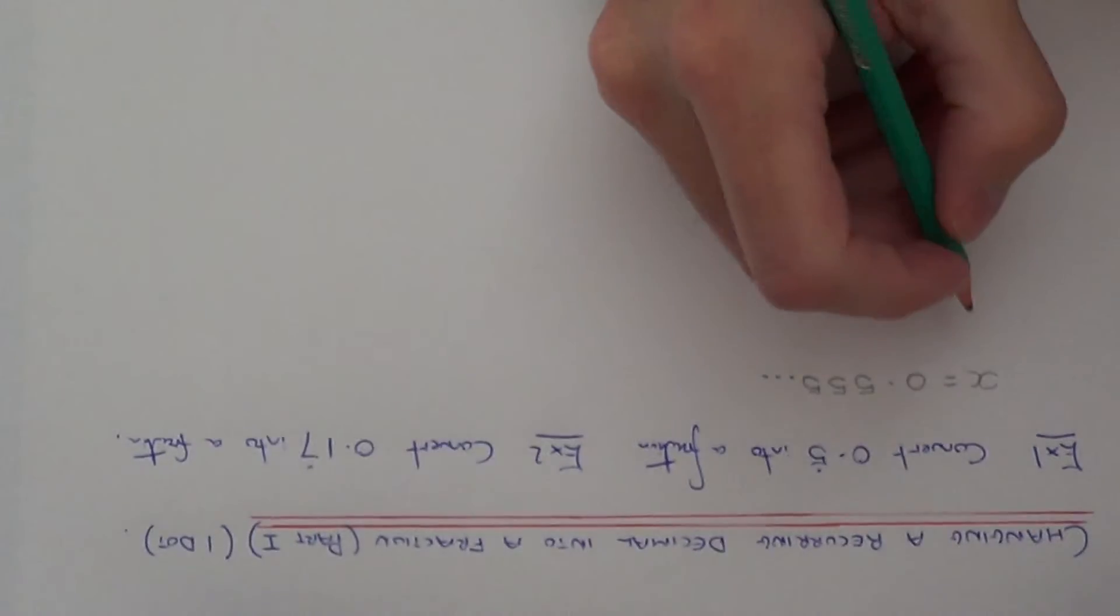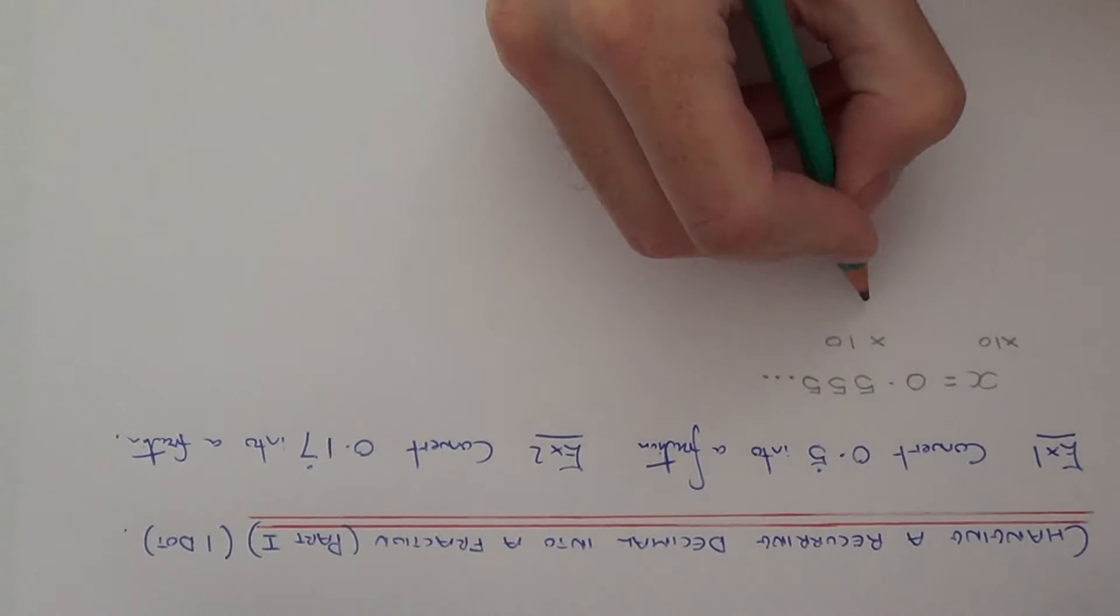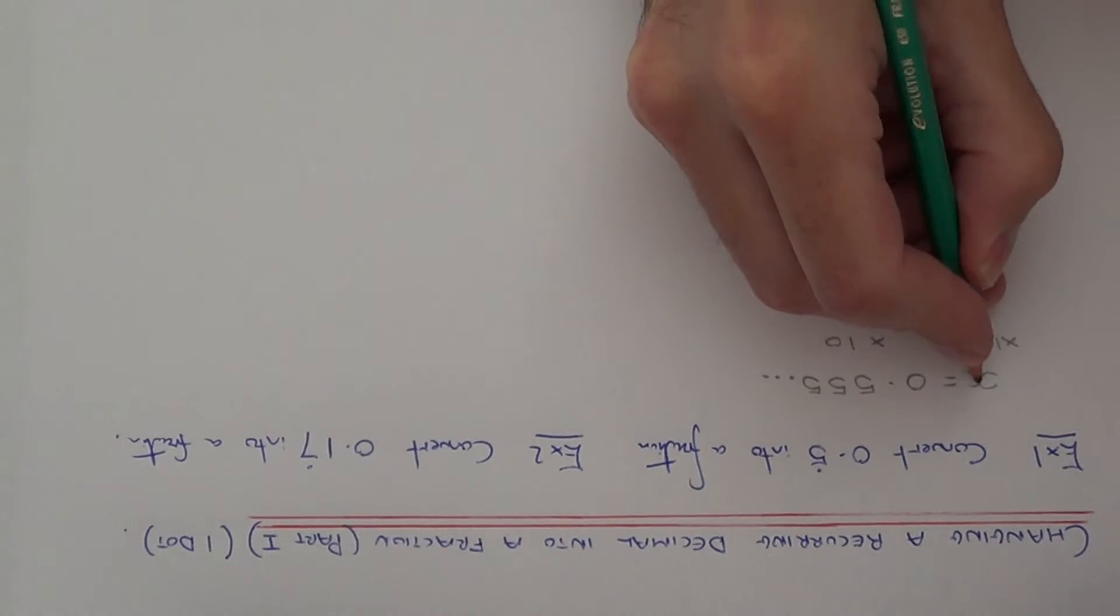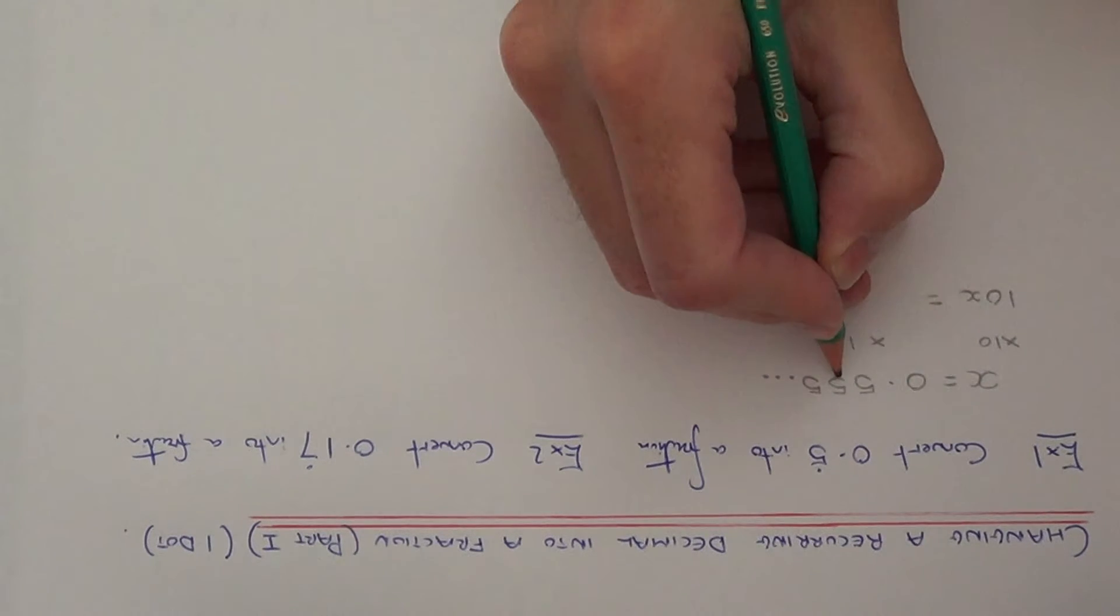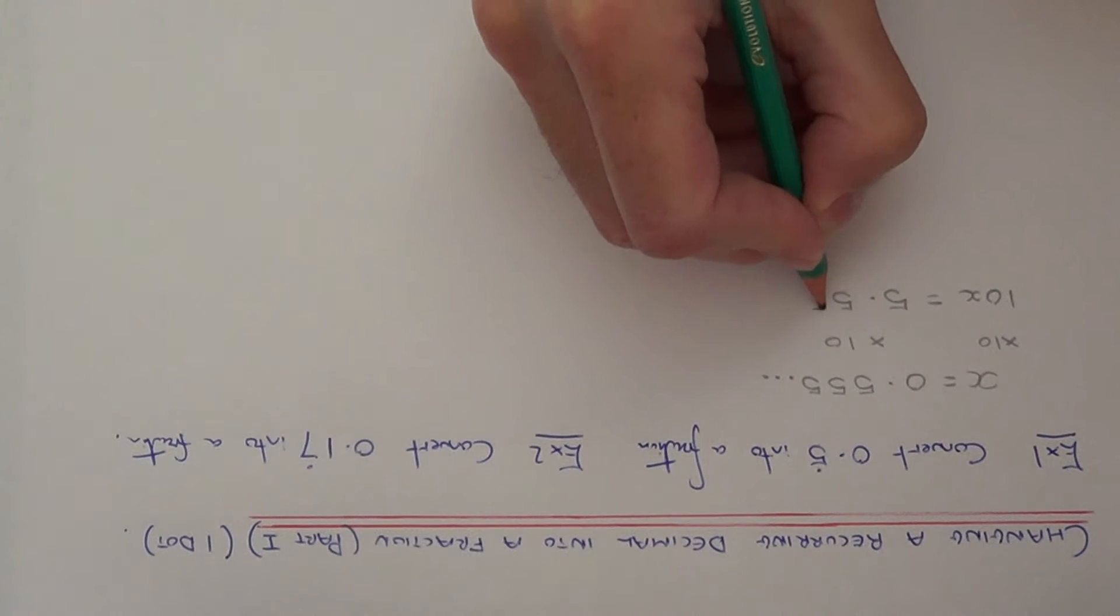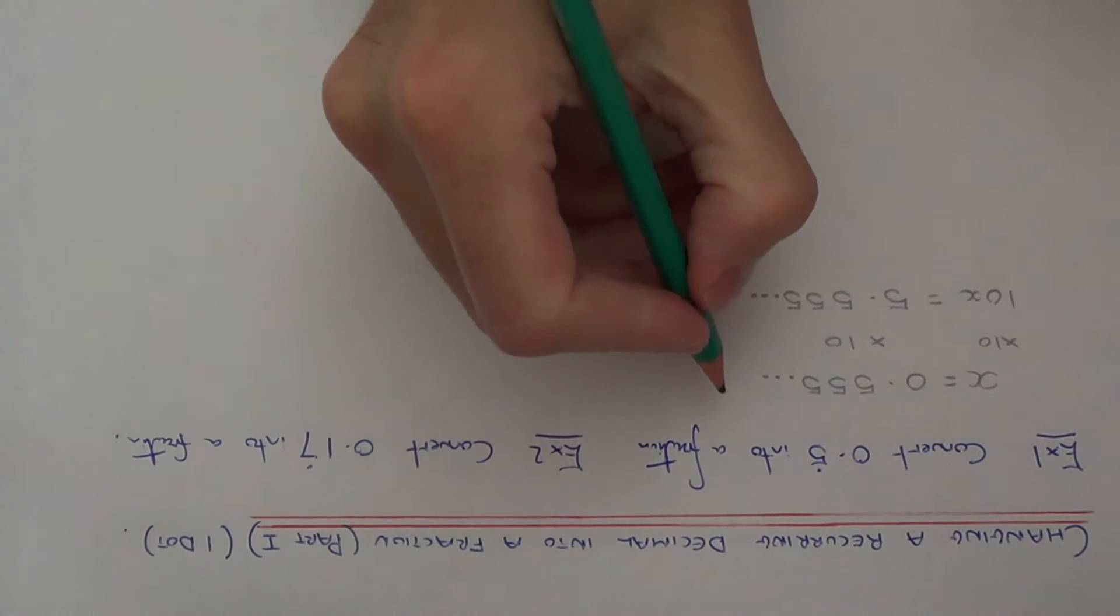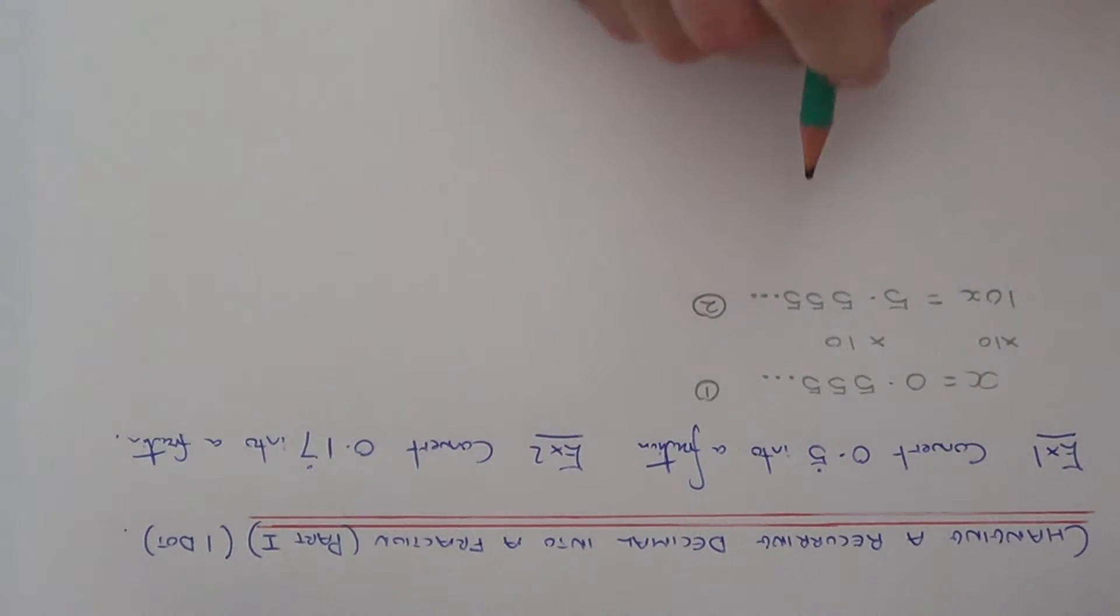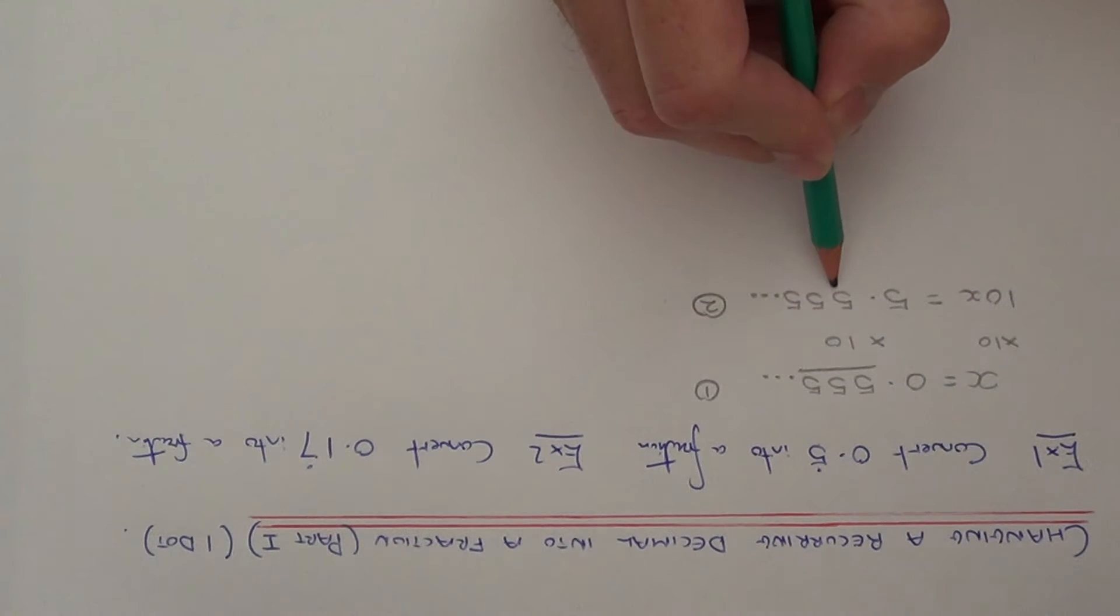The next thing to do is multiply both sides of the equation by 10. So x times 10 will give me 10x and 0.555 multiplied by 10 will give me 5.555 etc. So we've now got two equations here. If you notice now that the numbers after the decimal point are the same for both equations.